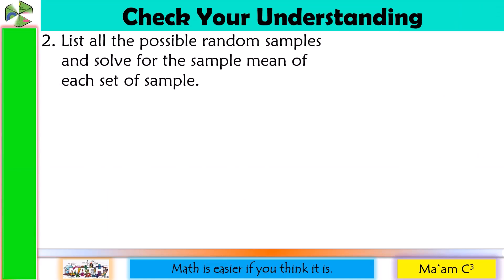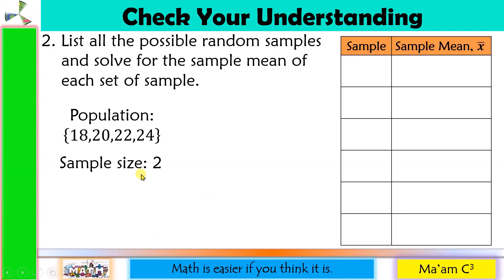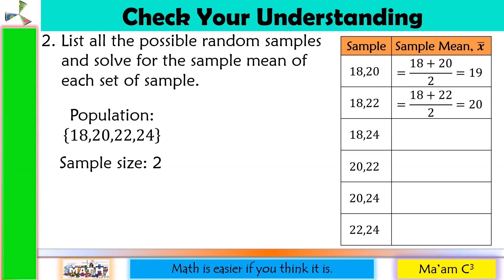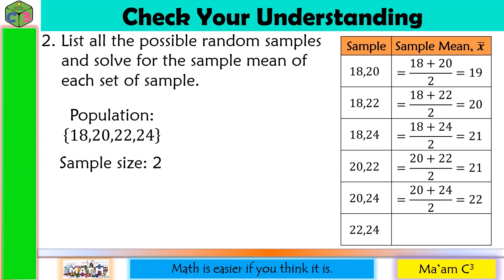Step 2: list all possible random samples taken 2 at a time and solve for the sample mean. We have: {18,20}, {18,22}, {18,24}, {20,22}, {20,24}, and {22,24}. The sample means are: (18+20)÷2=19; (18+22)÷2=20; (18+24)÷2=21; (20+22)÷2=21; (20+24)÷2=22; and (22+24)÷2=23.